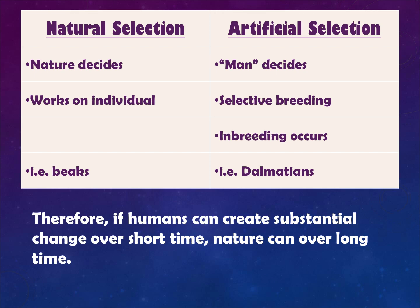Natural selection works on the individual, while artificial selection selectively breeds for a population. A major downside of artificial selection is inbreeding, which reduces genetic variability. Artificial selection can take place over a shorter time, whereas natural selection takes a long time.